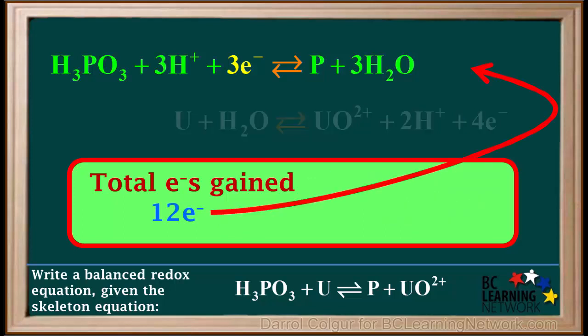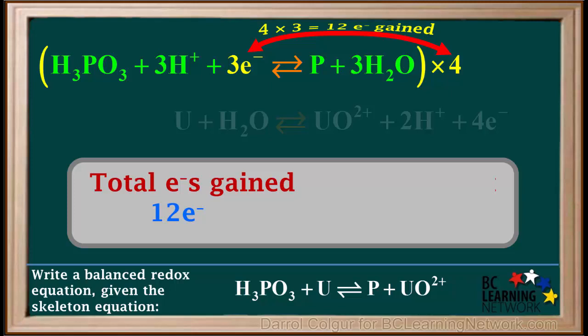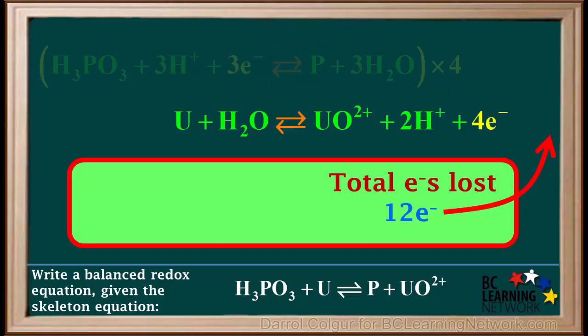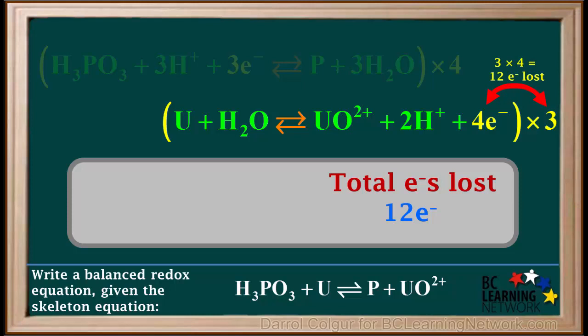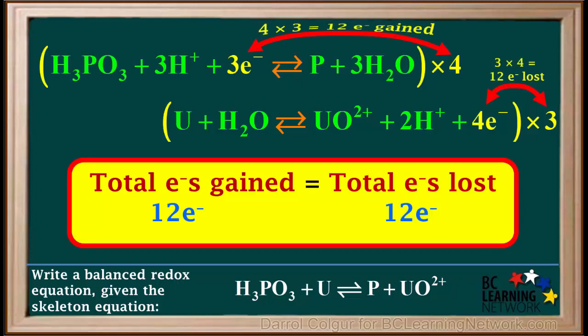So, we make the total electrons gained and the total electrons lost both equal to 12. To make the top equation gain 12 electrons, we multiply the whole equation by 4. So, we have 4 times 3 equals 12 electrons gained. And to make the lower equation lose 12 electrons, we multiply the whole equation by 3. So, now we have 3 times 4, which is equal to 12 electrons lost. So, multiplying by these factors 4 and 3, the total electrons gained will be equal to the total electrons lost.